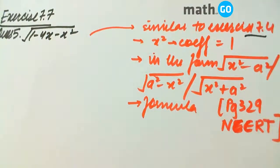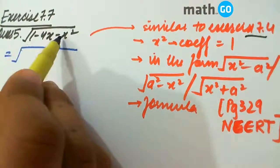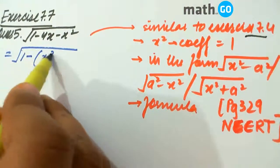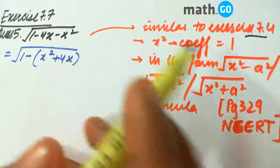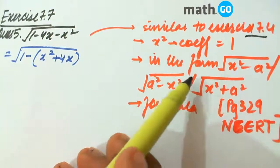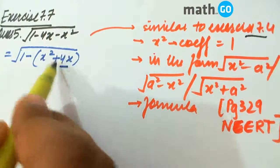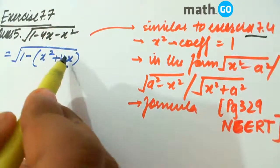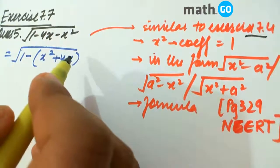So let us proceed the same way. We have this coefficient 1. So, 1 minus x squared plus 4x. This can be written like this. Now, this is to be converted into perfect square form. The middle term — the term containing x divided by 2 — will be 2, and that square is to be added and subtracted.